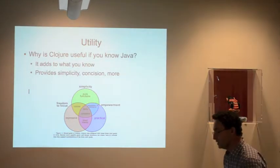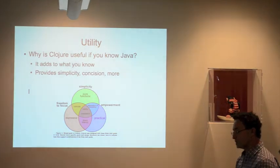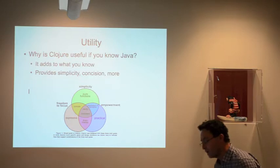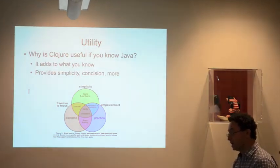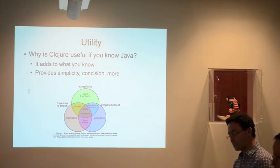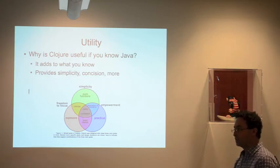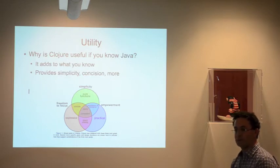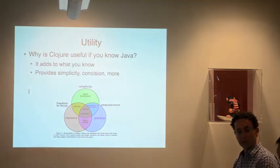Using Clojure is a lot about utility. Why is Clojure useful if you already know Java? There are some goals about the way the language was designed. Among them were to provide simplicity and concision, and to allow the freedom to focus on the problem domain. If you're working on solving X, you shouldn't have to go too far afield from the language of X in order to address that problem.